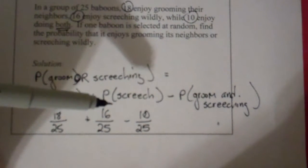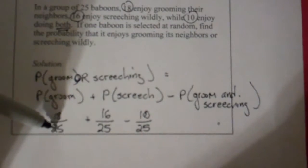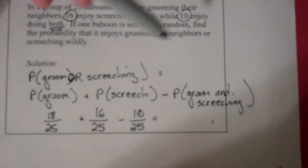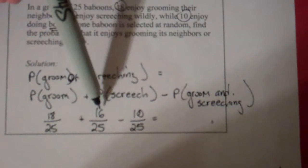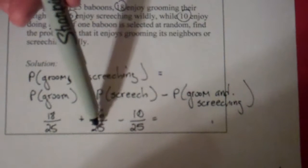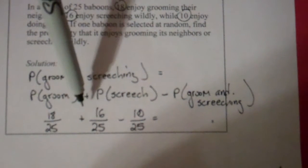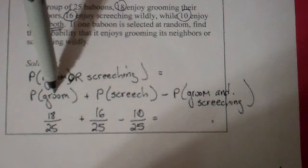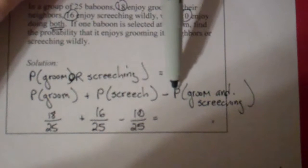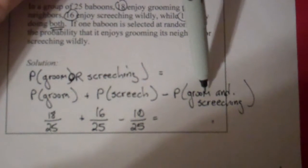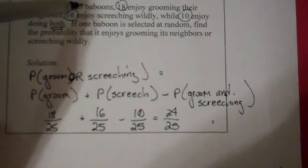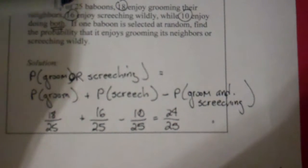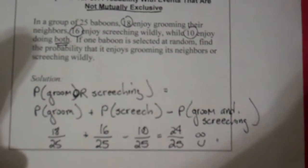Since I have a common denominator throughout, I want 18 plus 16 to give me 34. But 34/25 is already a probability higher than 1, which is a problem — so we definitely need to subtract the baboons that like to do both. So 34 minus 10 gives us 24/25. There's only one baboon who doesn't enjoy grooming or screeching wildly.